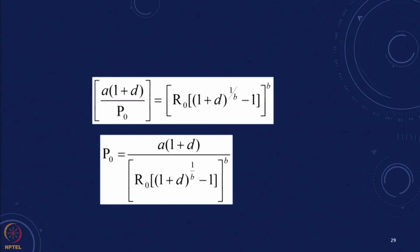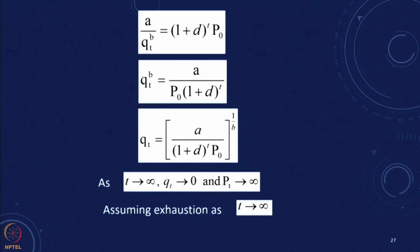We have now derived all expressions for the price trajectory and quantity trajectory under perfect competition. The question is: what if there is a monopoly? If the mine manager controls all the mines, will the strategy remain the same or will it be different? We will look at this in the next module.